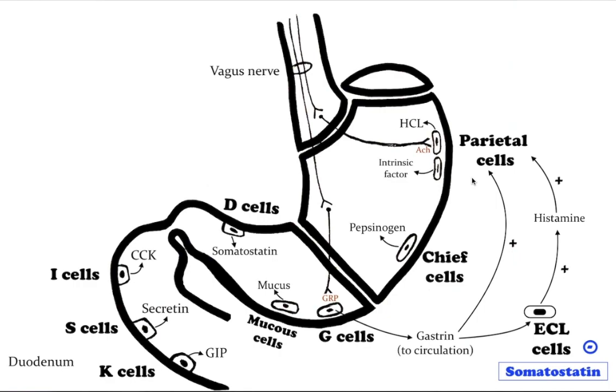Gastric enteroendocrine cells are found in the gastric glands, mostly at their base. Parietal cells, also known as oxyntic cells, are epithelial cells in the stomach that secrete hydrochloric acid and intrinsic factor. These cells are located in the gastric glands found in the lining of the fundus and cardia.